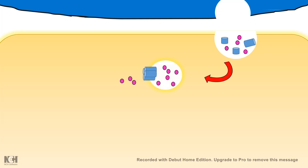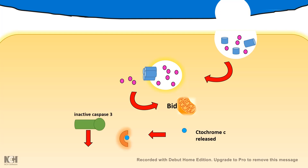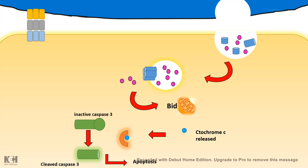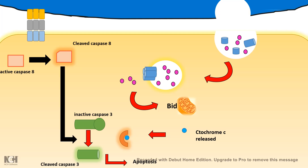The blue cell is the T cell and the yellow cell is the virus-infected cell. Perforin forms a pore through which granzyme can enter, and granzyme can activate several pro-apoptotic proteins like Bid, Bax, Bad, etc., which all lead to leakage of cytochrome c into the cytosol. That ultimately activates inactive caspase 3 into cleaved caspase 3, leading to apoptosis. Separately, there are receptor-ligand interactions — such as FASL and FAS — on the cell surface, which can activate and cleave inactive caspase to form activated caspase 8, ultimately leading to caspase 3 production and apoptosis.